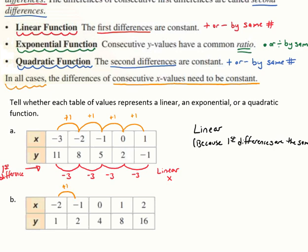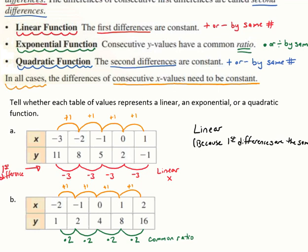Looking at table B, the x values again increase by 1 each time. For the y values, going from 1 to 2 to 4 to 8 to 16, adding doesn't give a constant result, but multiplying by 2 each time does. Because we multiplied by the same number each time, we have a common ratio, which means this is an exponential function.